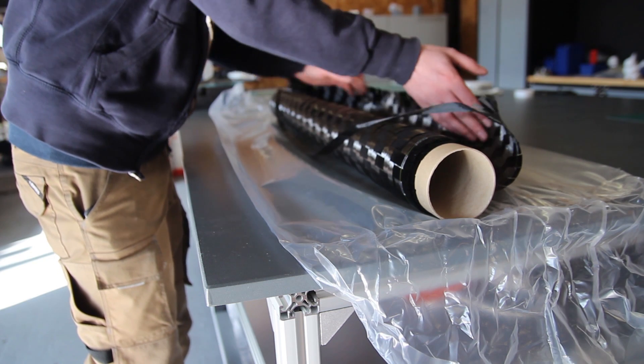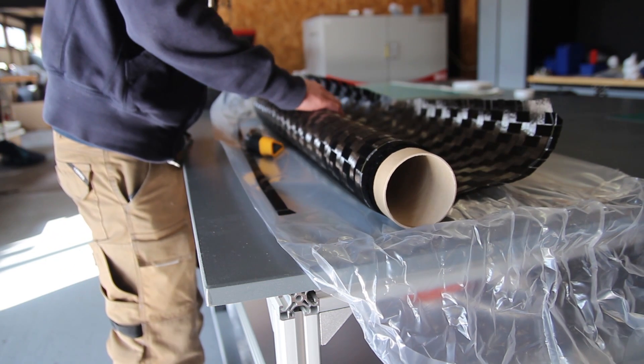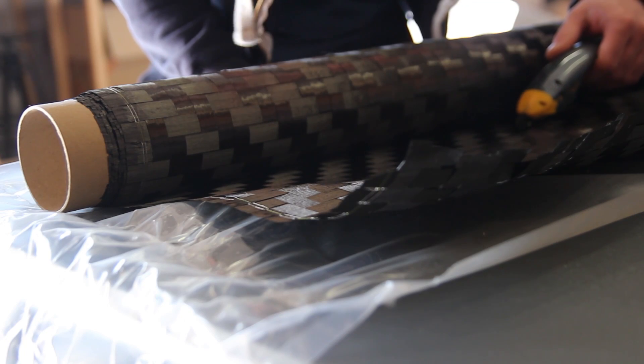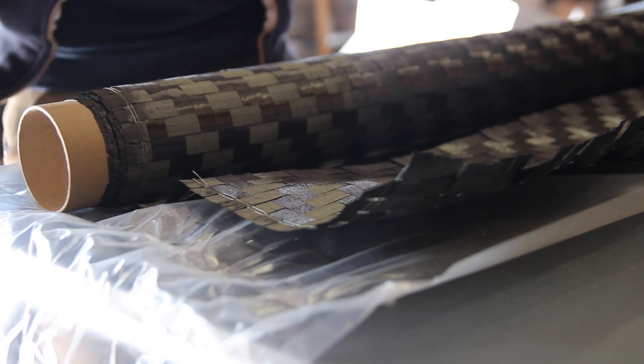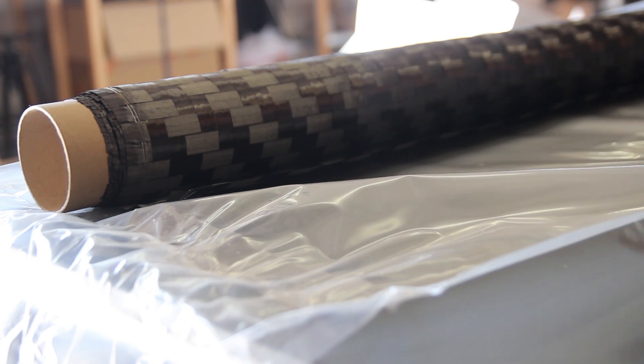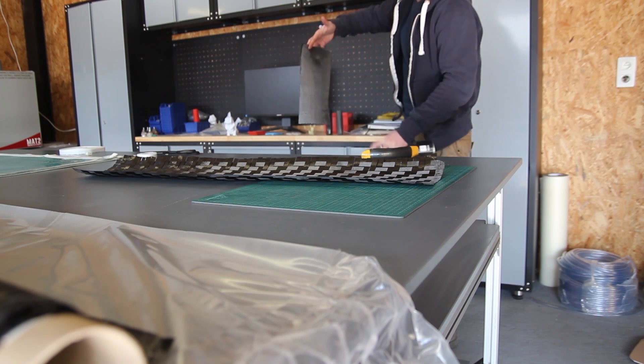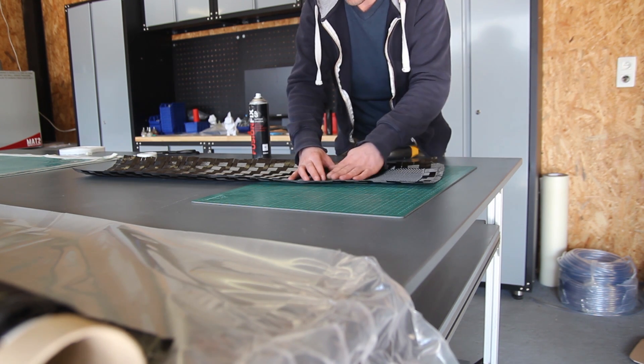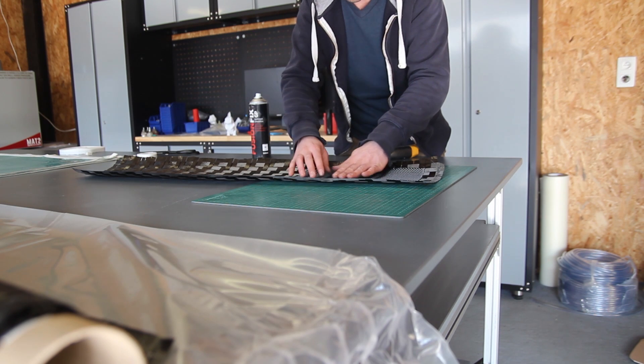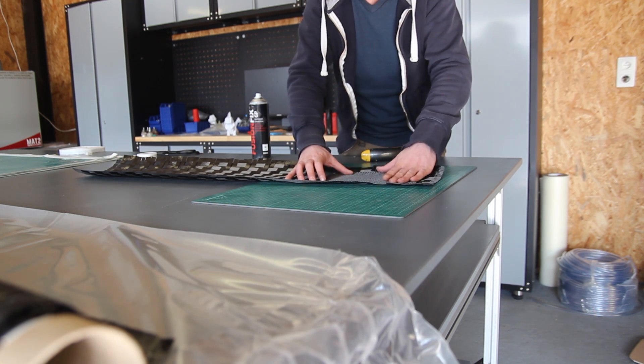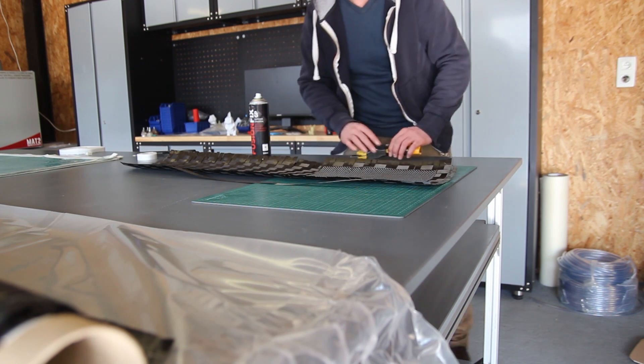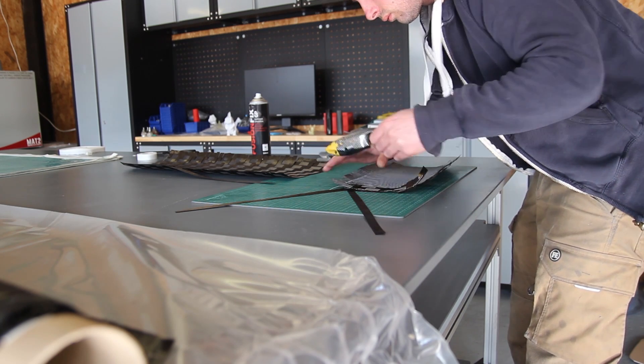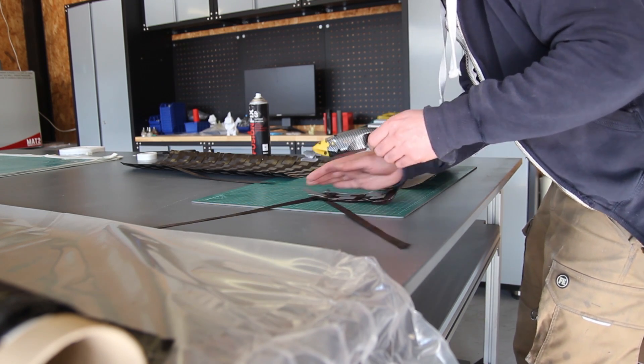So first of all we'll make a carbon fiber plate. This is a special weave. I decided to use it for this tutorial because I thought it might have some good results here. So this is a spread tow twill weave, 160 grams square meter carbon fiber. It has a special look because it has a thick weave, like the weave that you know from carbon fiber but in a bigger dimension. So that's why I chose to pick this one.